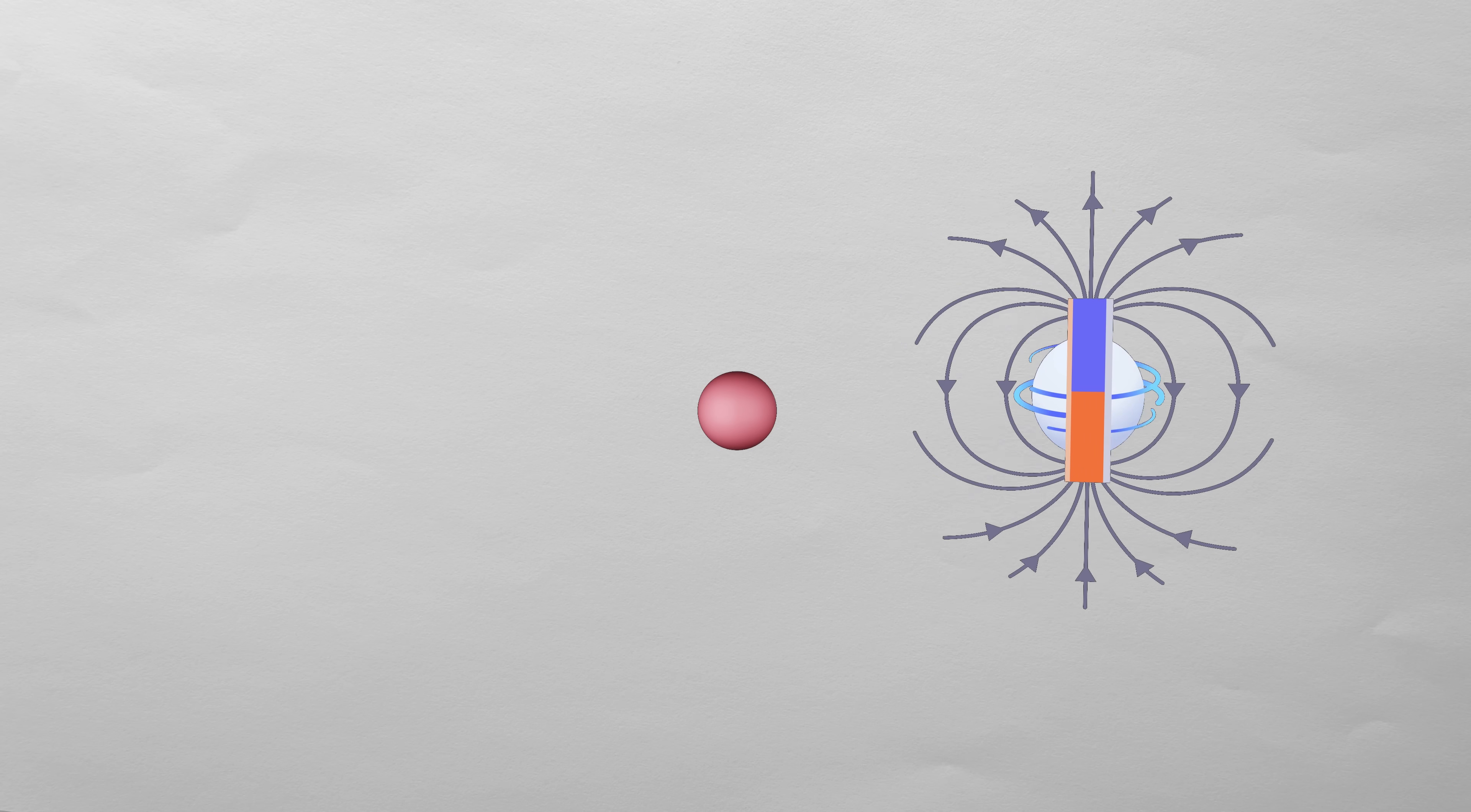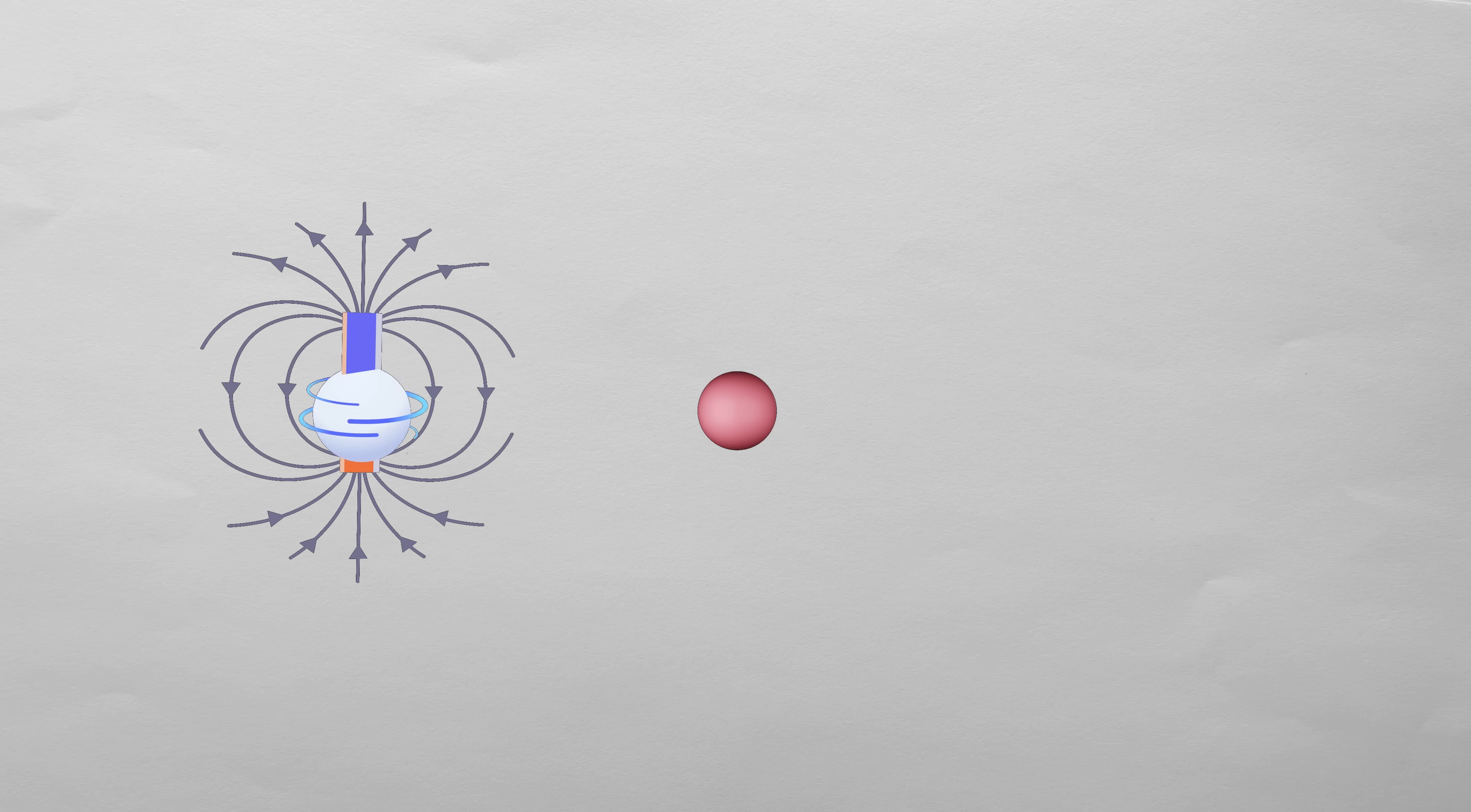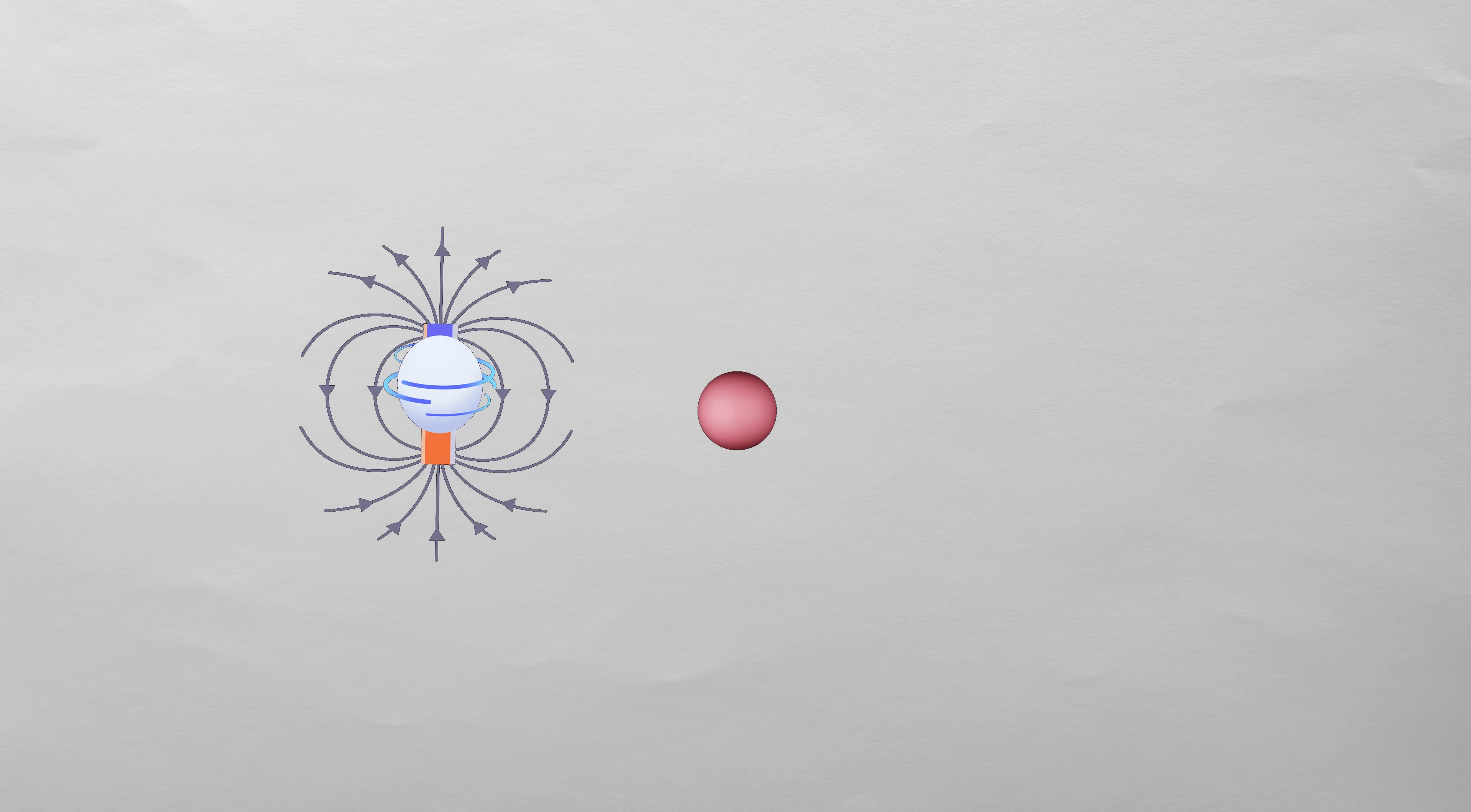And since electrons are negatively charged, spinning them like a charged sphere should generate a magnetic field, making each electron behave like a tiny magnet with its north pole pointing up or down.